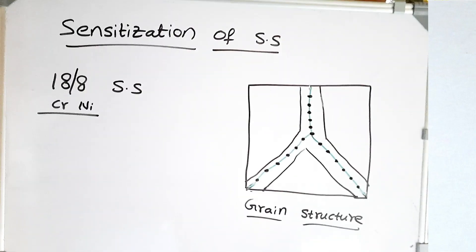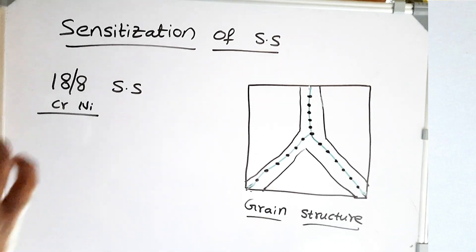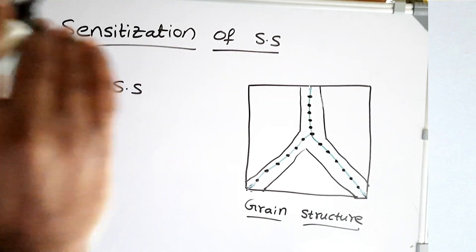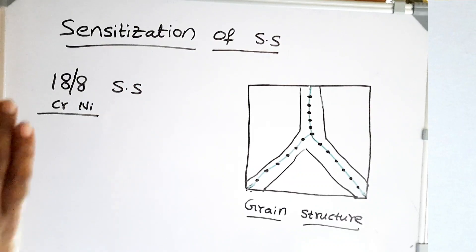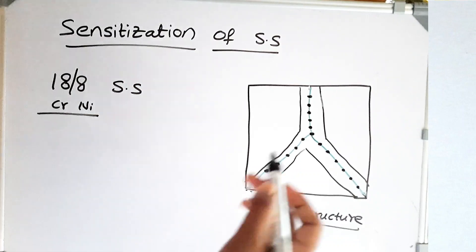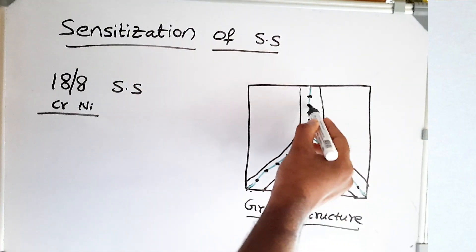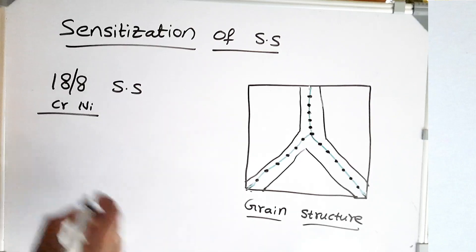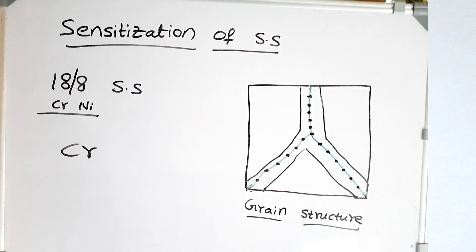Let's look at sensitization of stainless steels. This mainly occurs in 18/8 stainless steel — here 18% is chromium and 8% is nickel. What happens during slow cooling of these stainless steels is that chromium carbide precipitates around the grain boundary. We know the main purpose of chromium is to form an impervious layer so that it can protect the steel from corrosion.